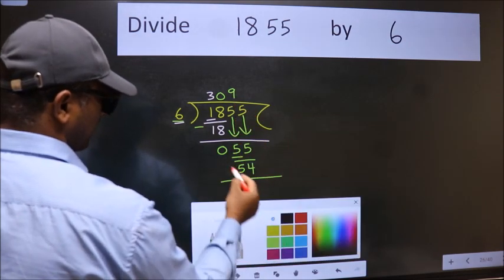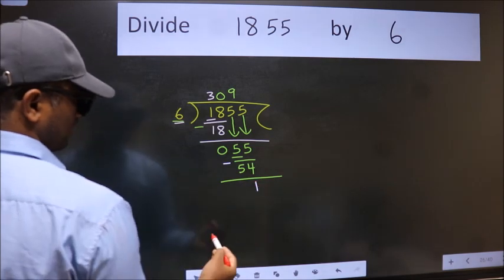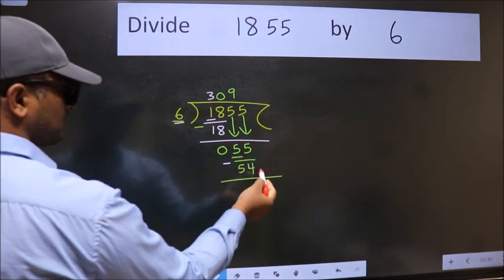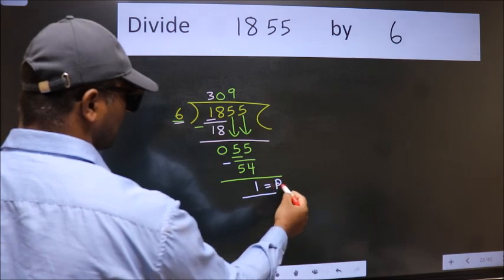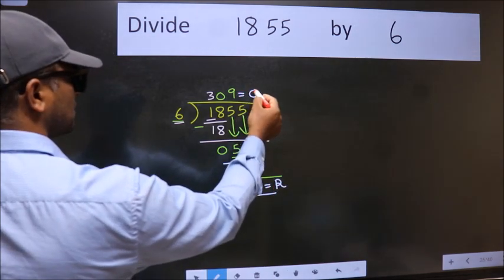Now we subtract. We get 1. No more numbers to bring down. So we stop here. This is our remainder and this is our quotient.